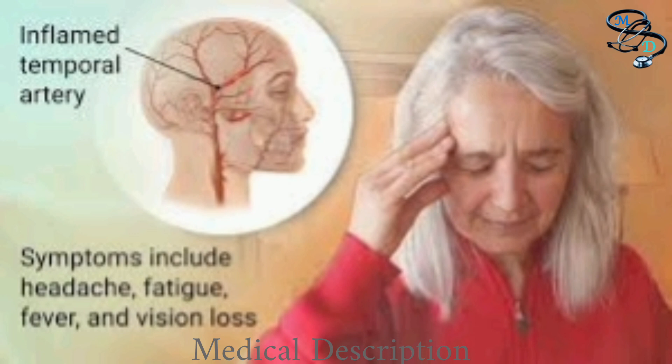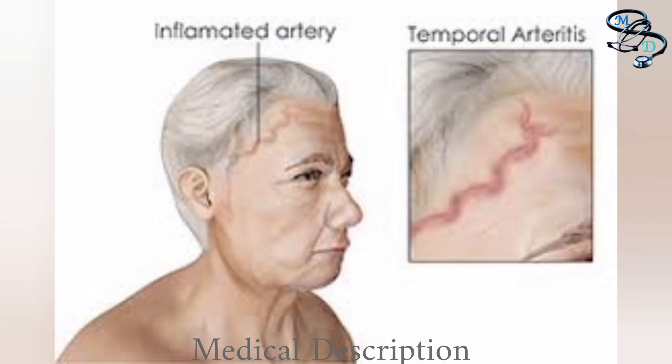Vision problems such as double vision, blurry vision, or transient brief vision loss may occur. If not treated, this could be followed by permanent irreversible vision loss. Additional symptoms include muscle aches in the upper arms, shoulders, hips, upper thighs, lower back, and buttocks, as well as loss of appetite or weight loss.